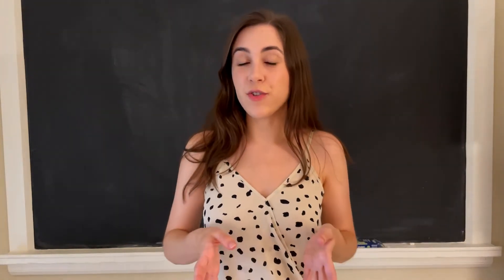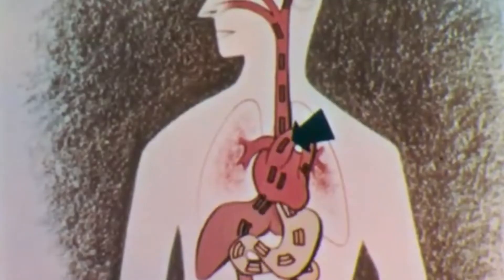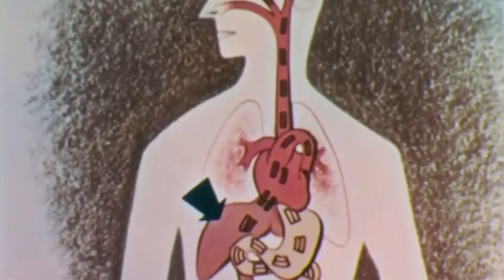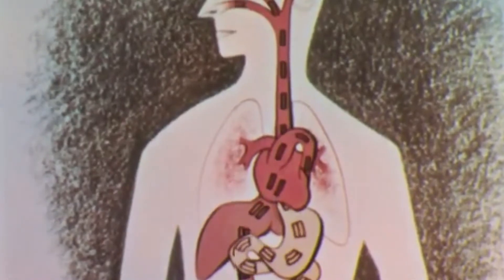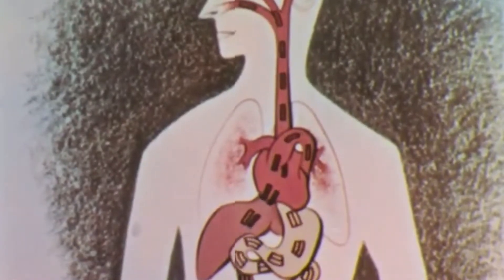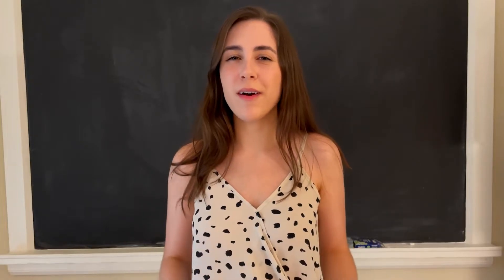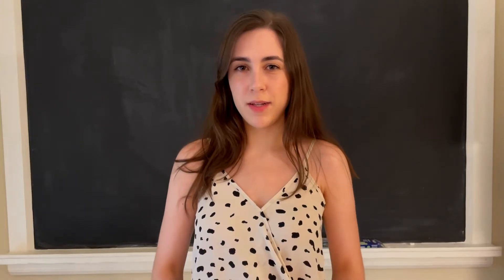You learn in school that your heart is on the left side of your chest, your liver is on the right, and your stomach on the left next to it. Everything in your body has its place.